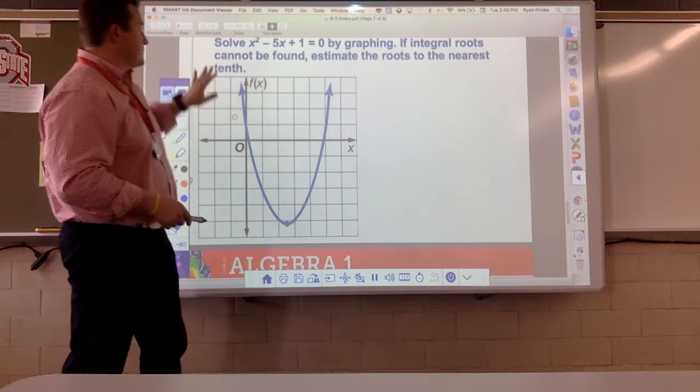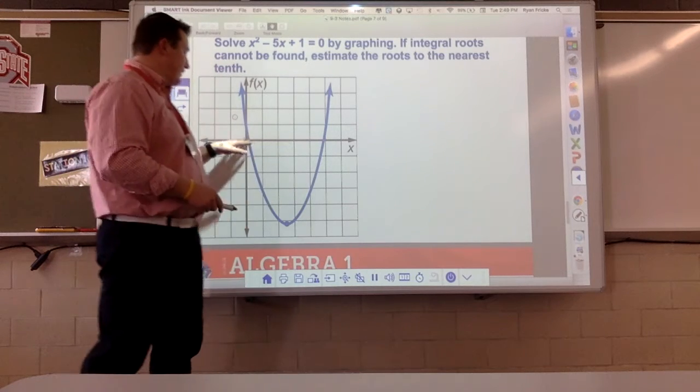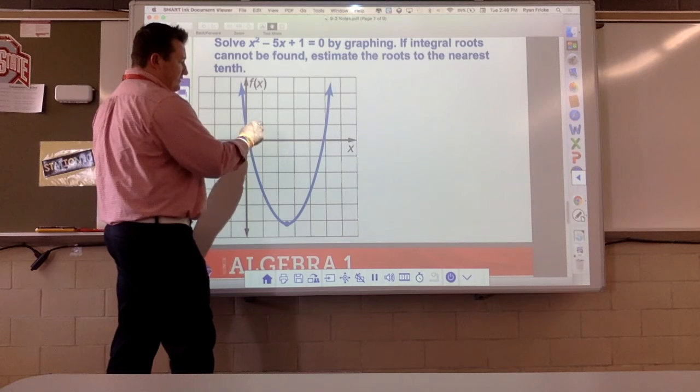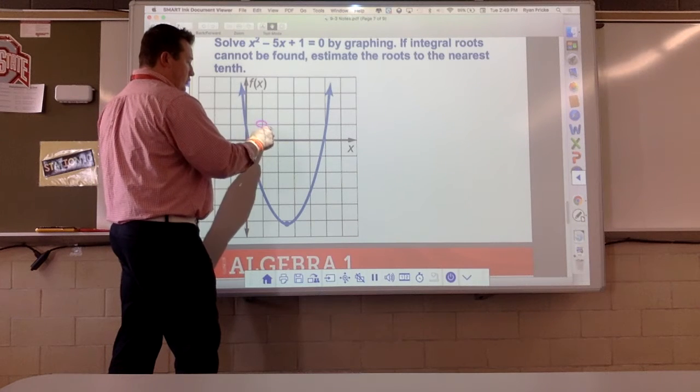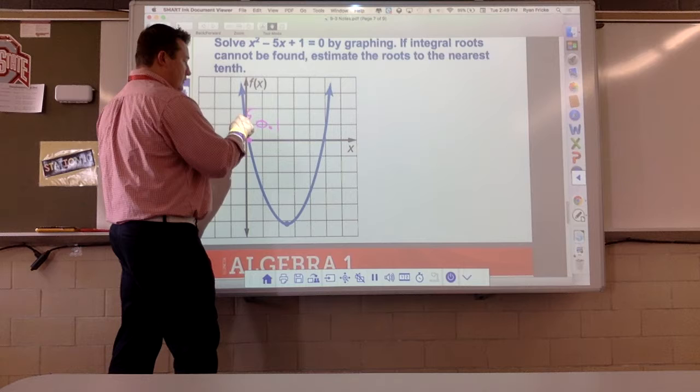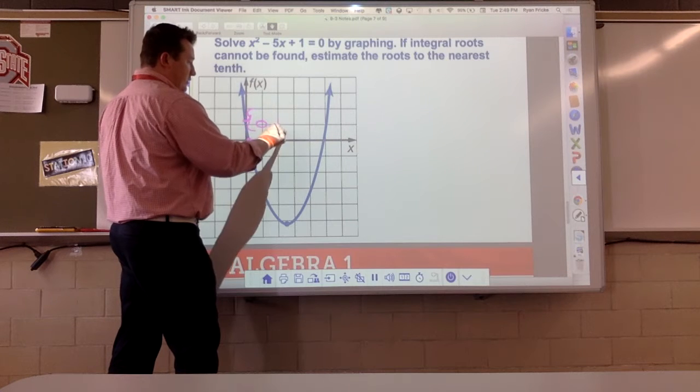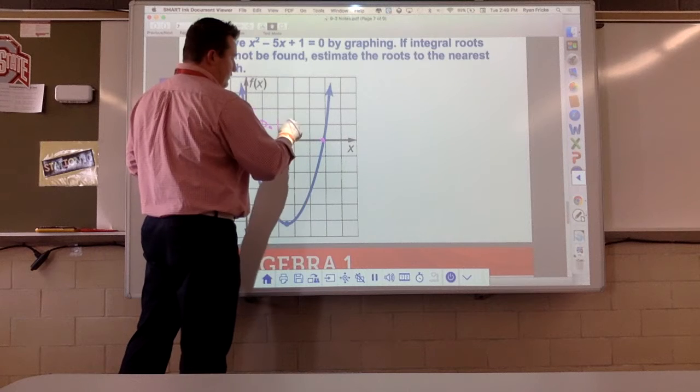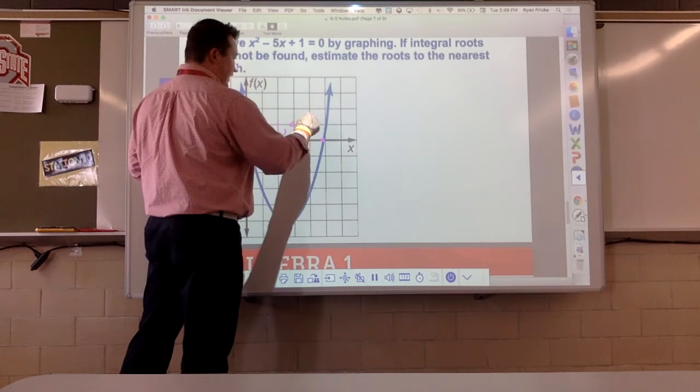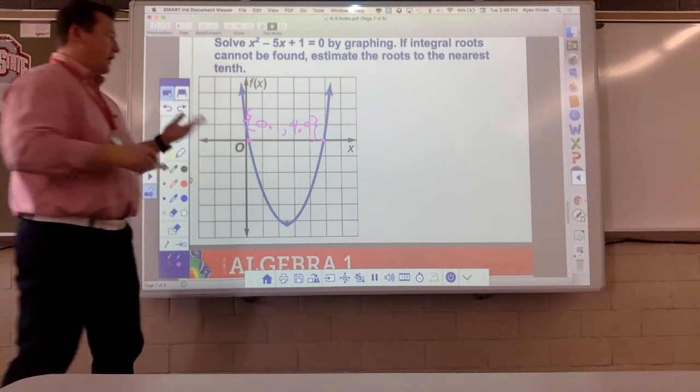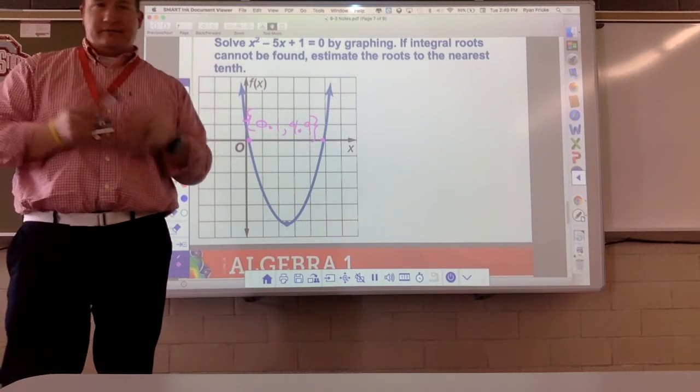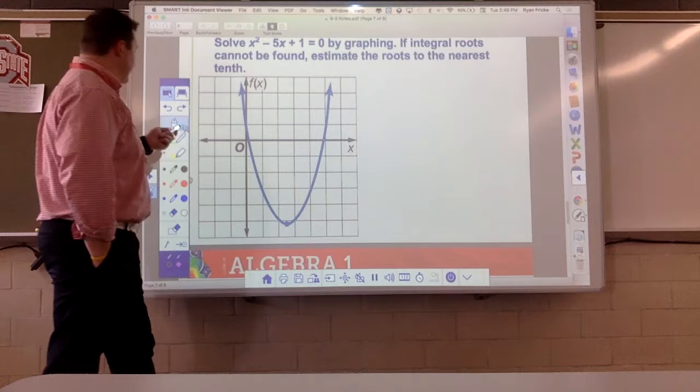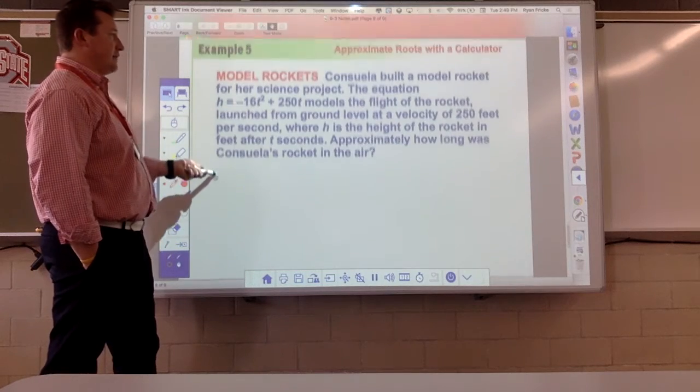Same thing here. Estimate. If we don't have good numbers, estimate them to the nearest tenth. Okay, so this one right here I'm going to say is 0.1. And this one right here, one, two, three, four. So something just a little less than five. Great. I went with one-tenth and 4.9.